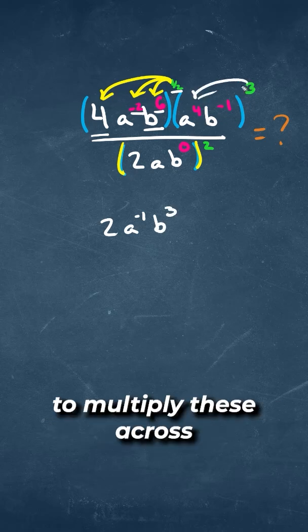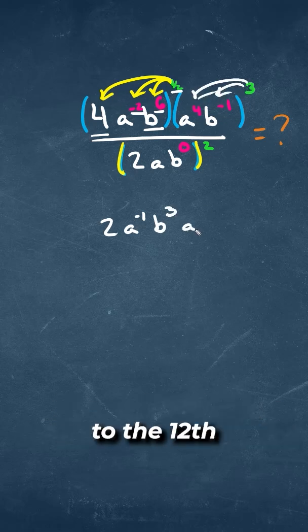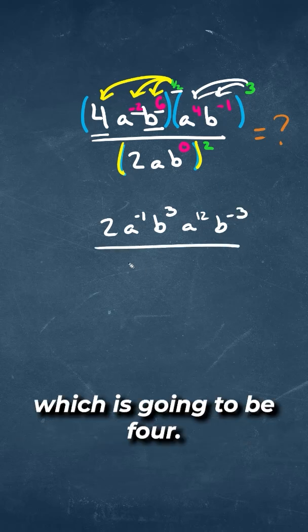And we're going to multiply these across over here. So we're going to get A to the 12th, B to the negative 3, all over 2 times 2, which is going to be 4.